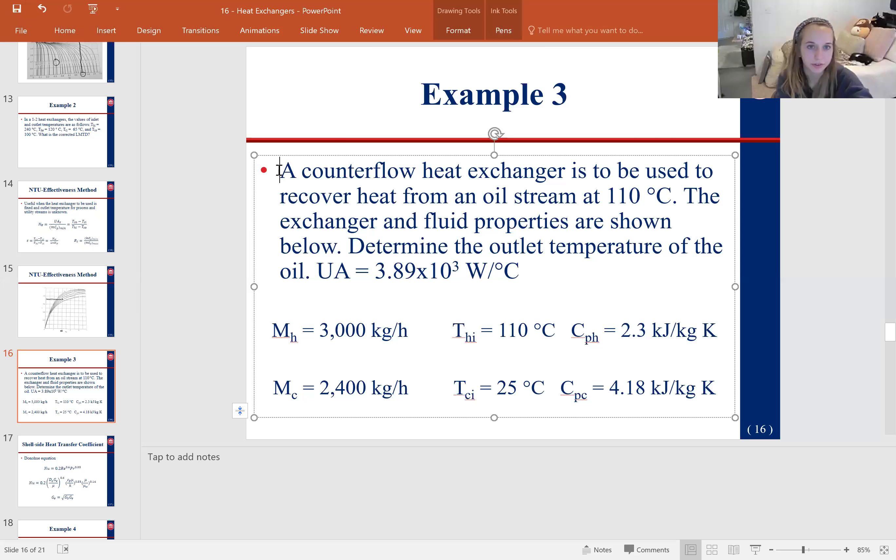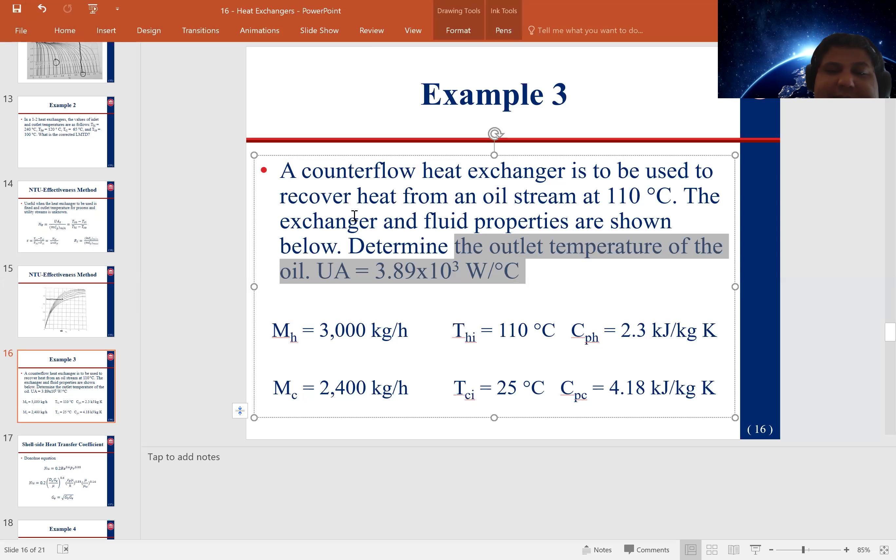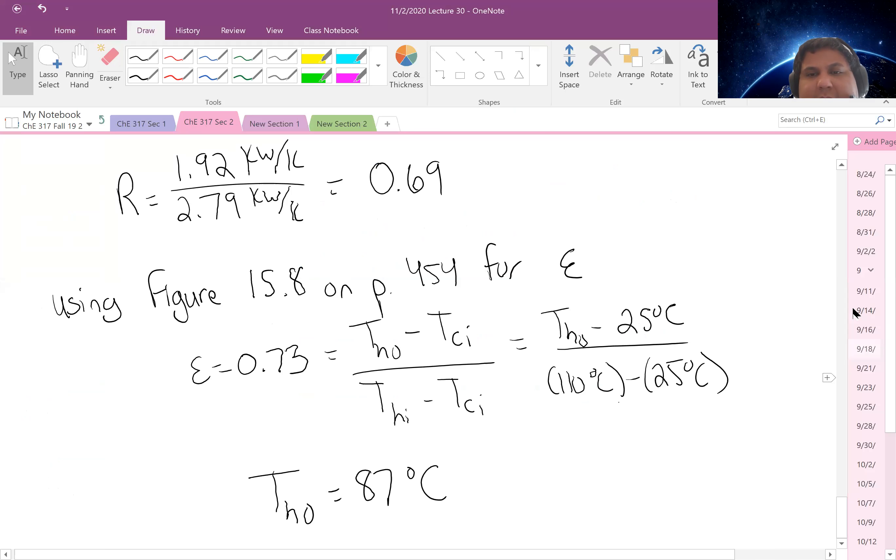Will that just always be something you give us in a problem? Yes. Yeah. You could technically calculate it if you had enough information. Like if you had the size of the shell and the size of the tubes and everything and the number of tubes, you could do all of the calculations to find U. But when it comes to these types of problems, that's really long. So if it's like on the final, I wouldn't do something like that. I would just give you the UA value. All right. Any questions on this problem?